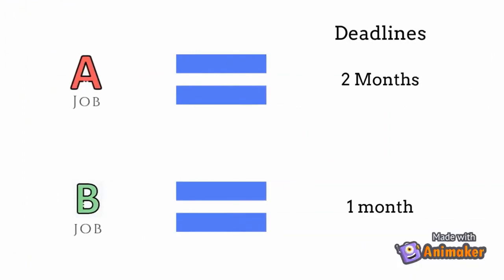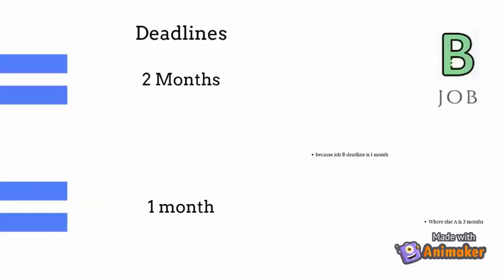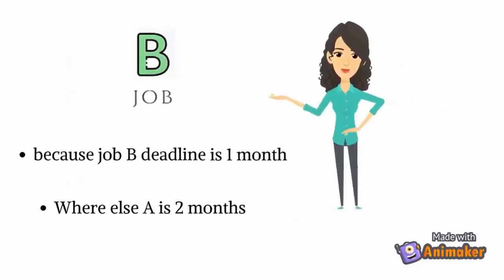She calculated which job requires the shortest time to accomplish. Both jobs could be finished in one month, but Job B's deadline is only one month, whereas Job A's deadline is two months. So she started with Job B first.